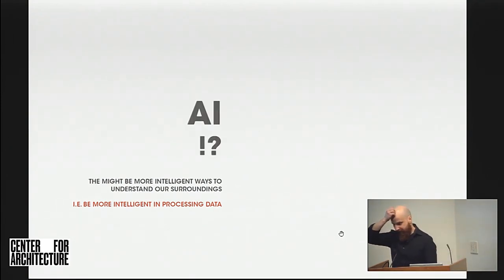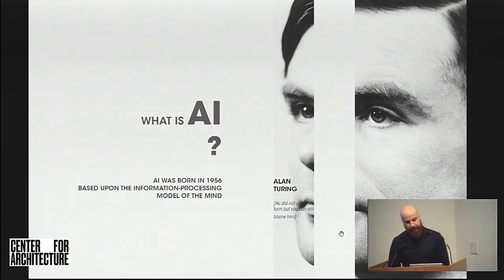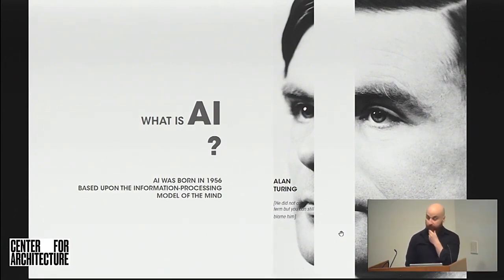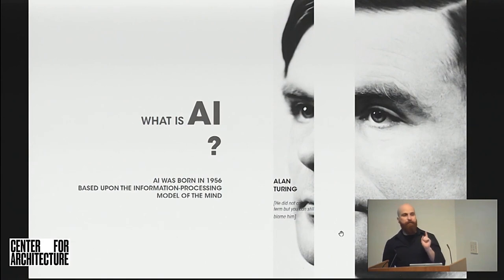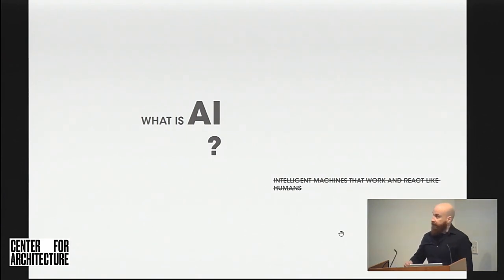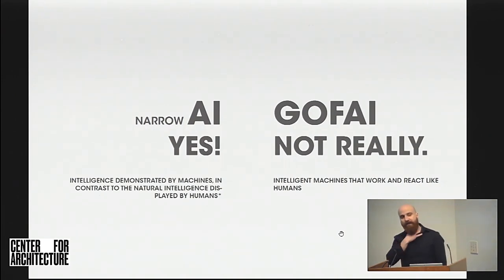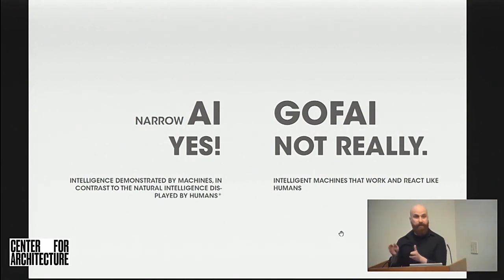So talking about intelligence — what is intelligence and what is artificial intelligence? You can blame this guy a little bit. This is Alan Turing. He didn't coin the term, but his early work influenced a lot of AI studies. AI was coined in 1956. It's based upon the information processing model of the mind — people said the mind works with input-output sequences, and electrical machines can imitate this. The common description from sci-fi movies might be intelligent machines that work and react like humans. That is some sort of AI, but it's classified as GOFAI — good old-fashioned AI. That's the real term used for this.